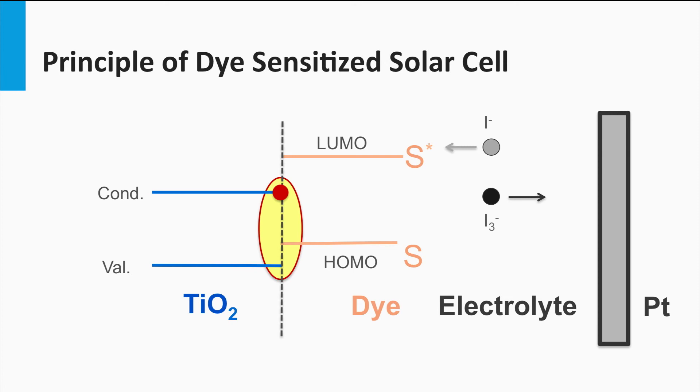The electrons in the titanium oxide move to the TCO-based back contact. The transport mechanism is diffusion-based. The electrons diffuse between the various titanium oxide nanoparticles until they arrive at the TCO contact. Through the electric circuit the electrons move to the counter electrode, in other words, the other contact.